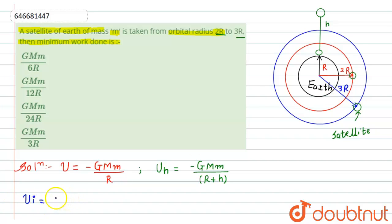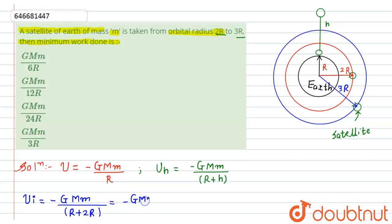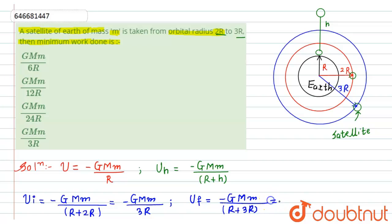The initial potential energy U_i = −GMm/(R + 2R) = −GMm/3R. Similarly, the final potential energy U_f = −GMm/(R + 3R) = −GMm/4R.